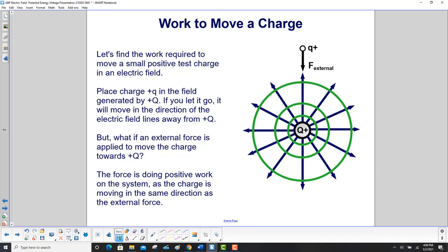Let's find the work required to move a small positive test charge over here in an electric field. Place the test charge in the field generated by the large Q over here. If you let it go, it will move in direction of the electric field lines away from the big plus Q.